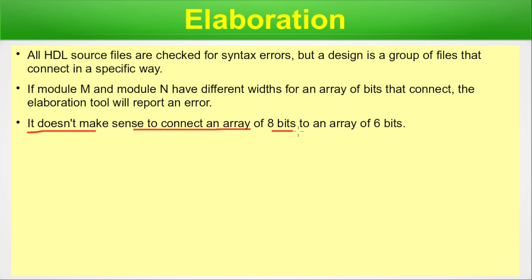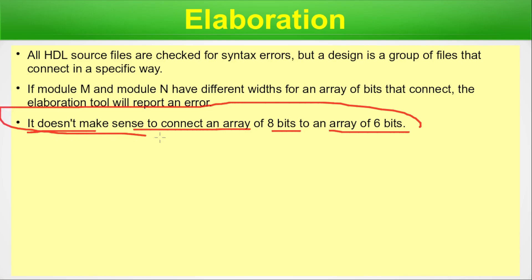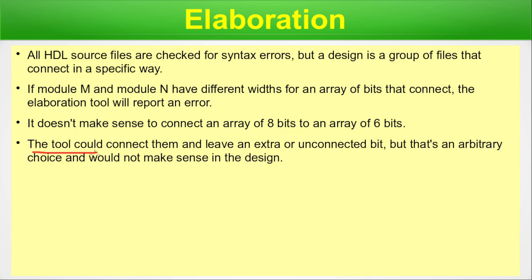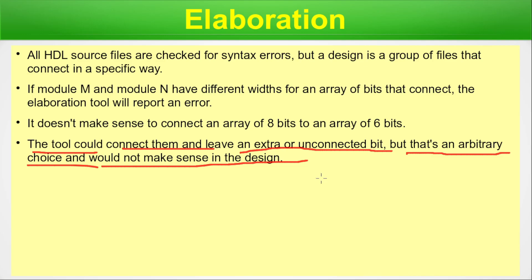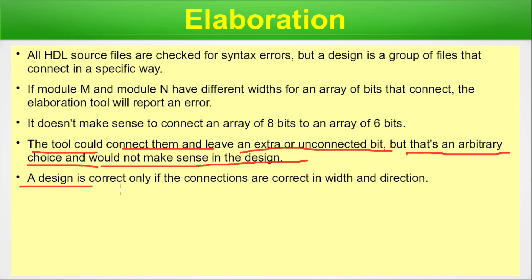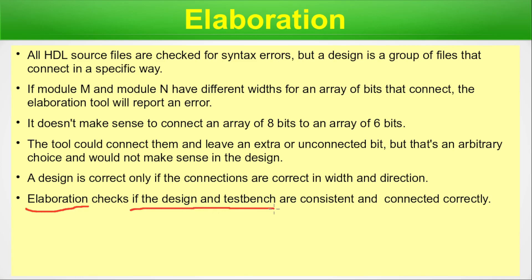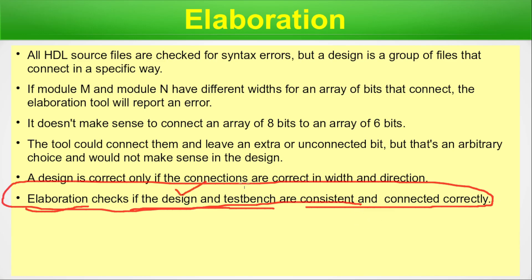For example, it doesn't make sense to connect an array of 8 bits to an array of 6. The tool could connect them and leave an extra unconnected bit, but that's an arbitrary choice that wouldn't make sense in the design. In large VLSI designs these mistakes are very easy to make due to human error. A design is correct only if the connections are correct in width and direction. Elaboration checks that the design and test bench are consistent and connected correctly.